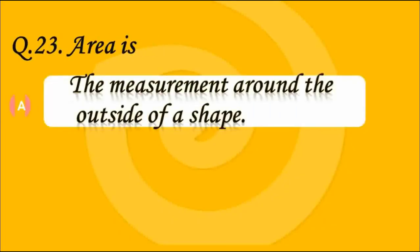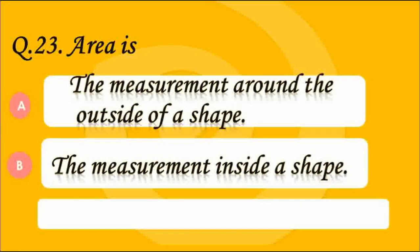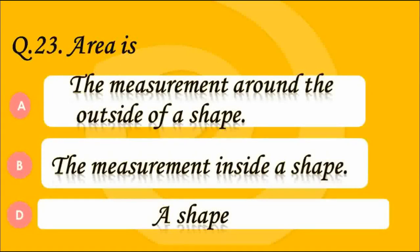Question number 23. Area is — Option A: the measurement around the outside of a shape. Option B: the measurement inside a shape. Option C: a shape. Answer B — the measurement inside a shape. Area is the measurement inside a shape, not outside.